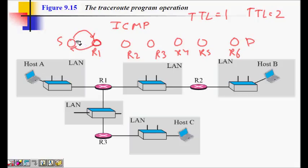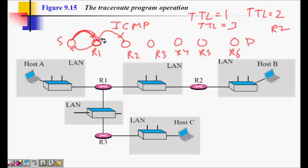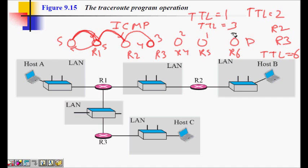Then I send another packet with TTL equal to 2. It reaches R1, TTL becomes 1, then reaches R2 where TTL becomes zero, and R2 sends an ICMP time exceeded message — so I learn R2 is the second router. Setting TTL to 3 reveals R3, and setting TTL to 6 reveals R6. By incrementing TTL one at a time, I can discover all the routers in the path. This is how traceroute traces the routers.